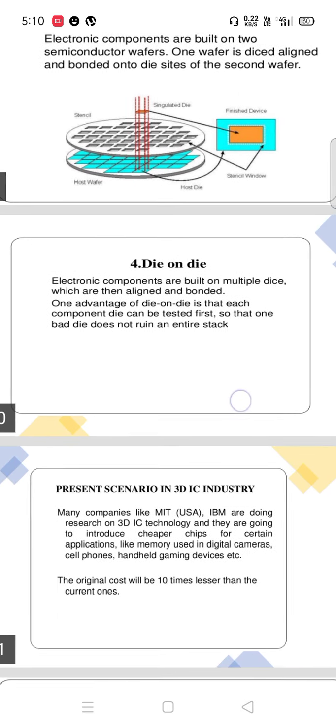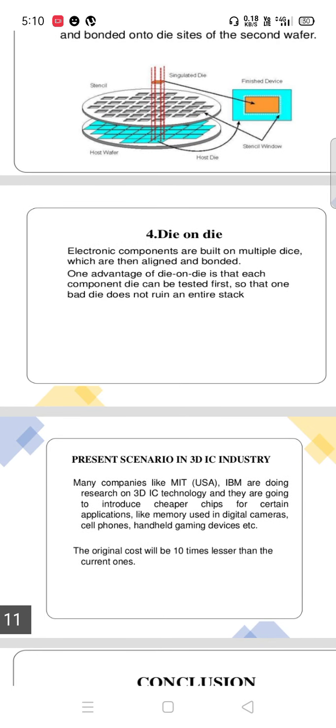Die on die is the fourth step of manufacturing. Electronic components are built on multiple dies, which are then aligned and bonded. One advantage of die on die is that each component die can be tested first, so that one bad die does not ruin an entire stack.